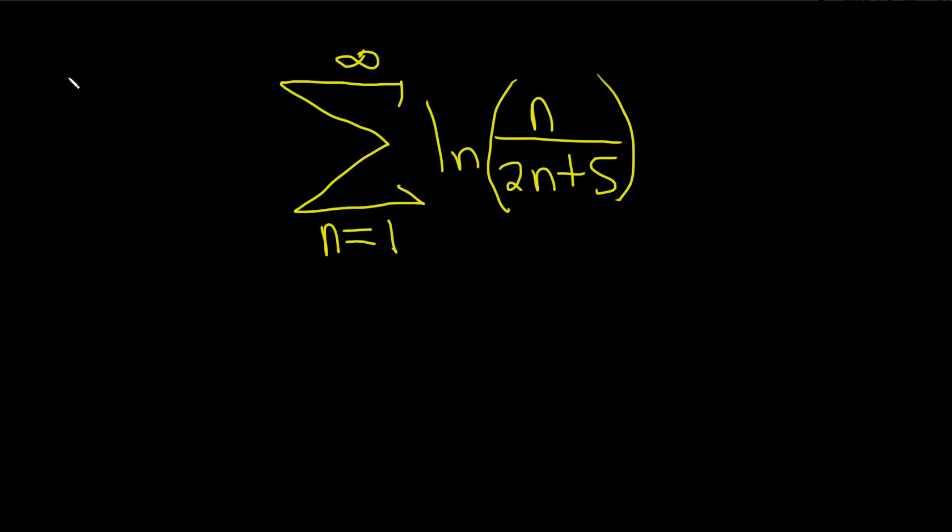So there is a series test called the nth term test which says if you have an infinite sum like this and you take the limit as n approaches infinity of whatever is here, so a sub n.